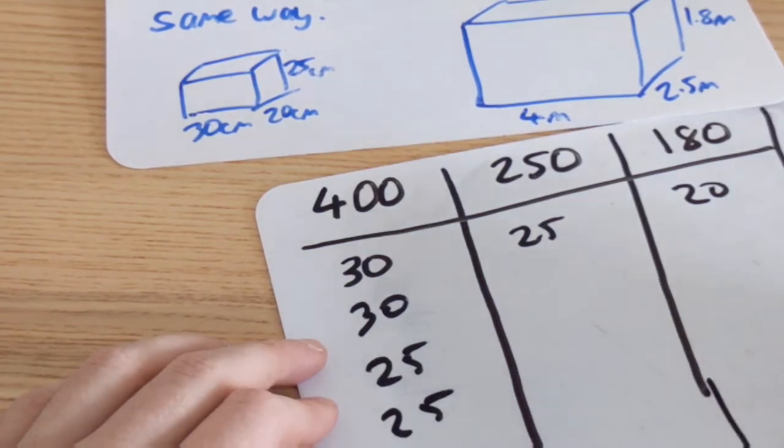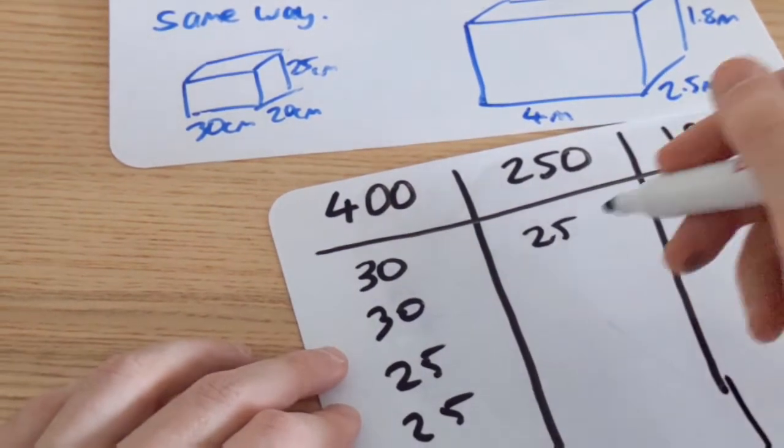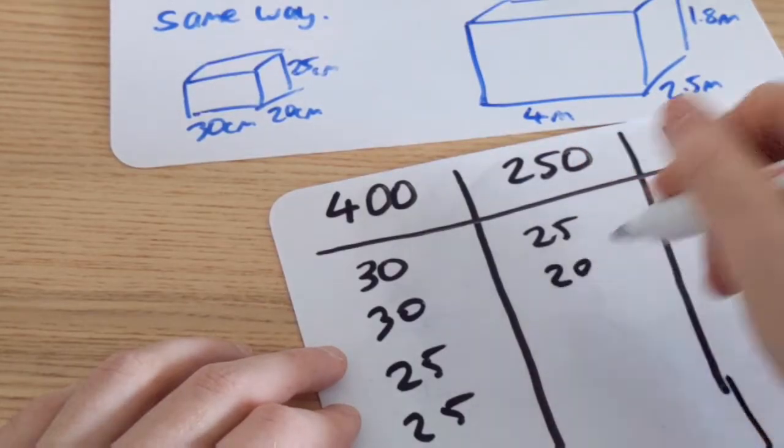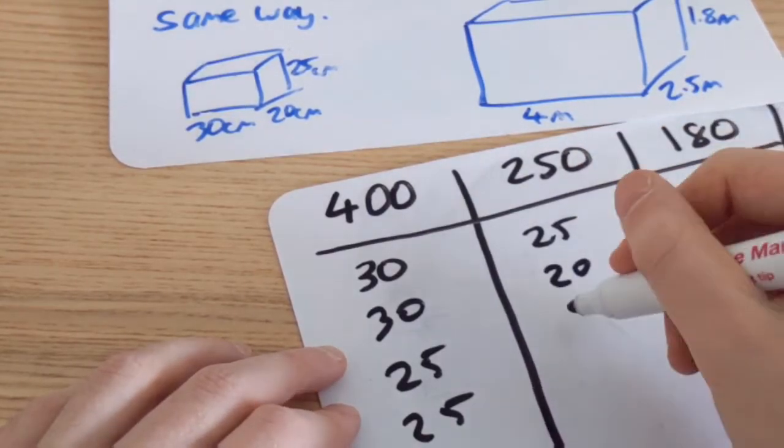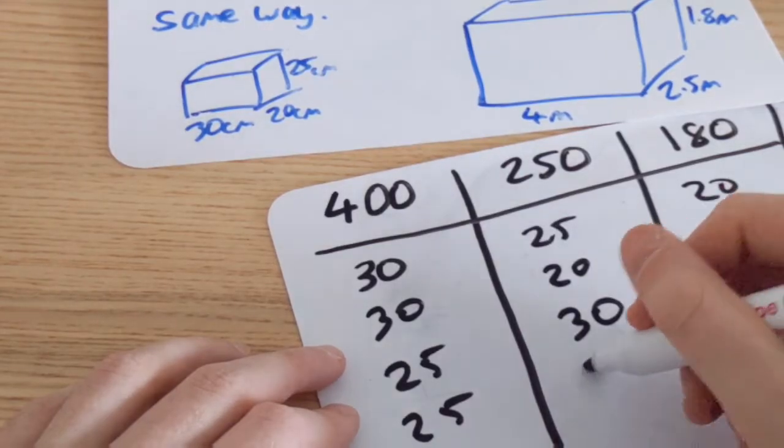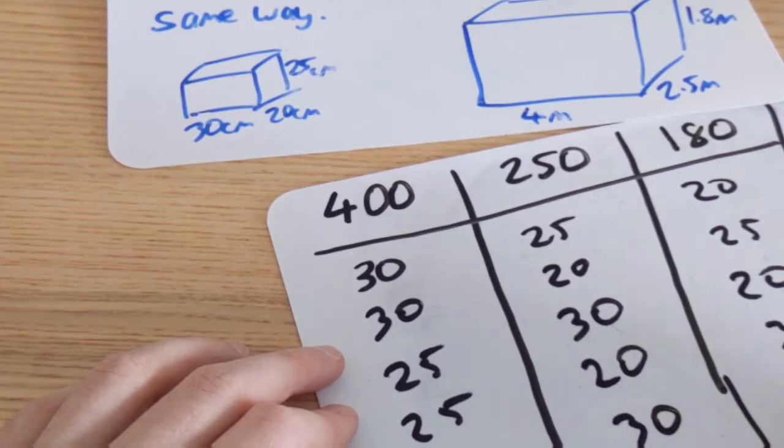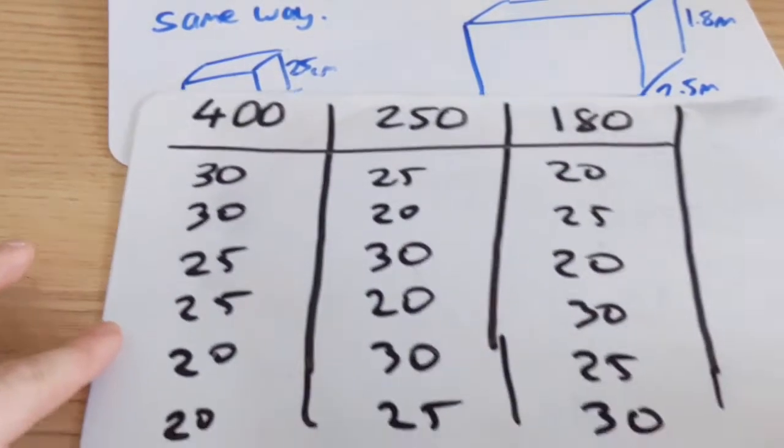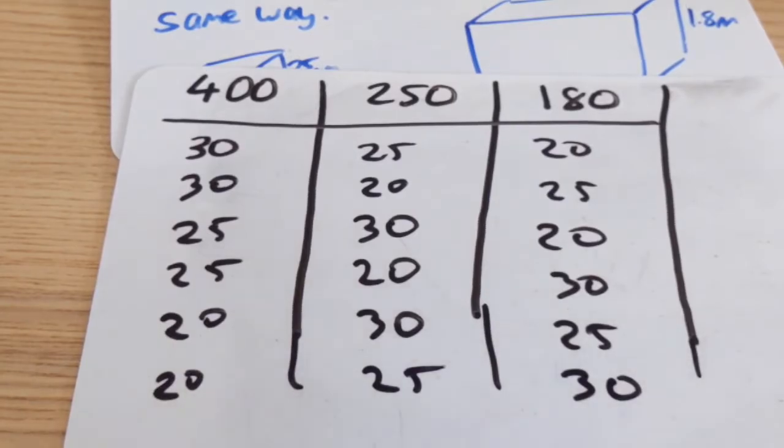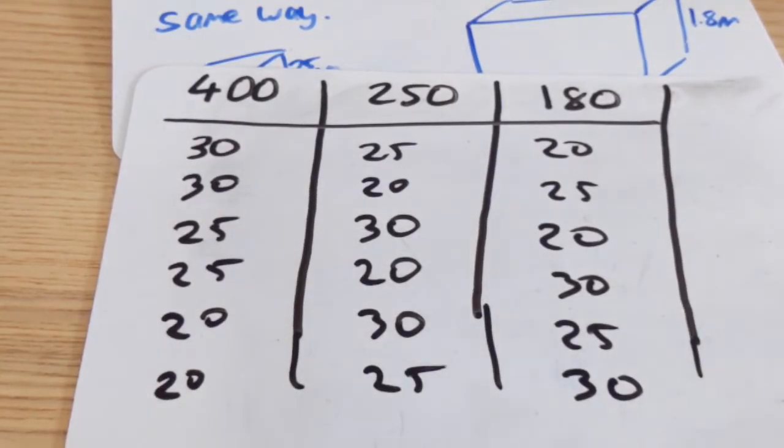Once I've done that, I just need to go through these and just keep swapping them around, so 25 and 20. Do 20 and then 25, I'll do 30 and then 20, 20 and then 30, 30 and then 25 and then 25 and 30. There are all the ways that I can stack the container with the boxes.